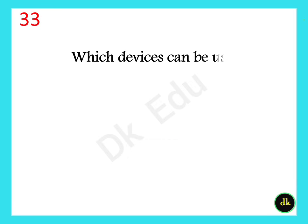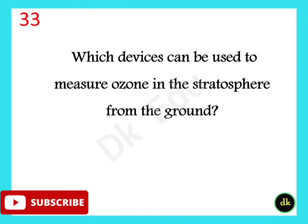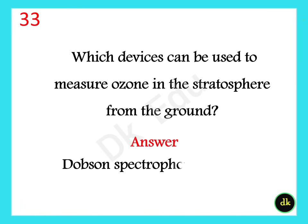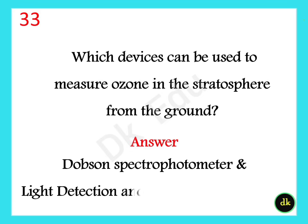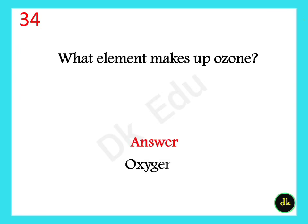Which devices can be used to measure ozone in the stratosphere from the ground? The Dobson Spectrophotometer and Light Detection and Ranging (LIDAR). What element makes up ozone? Oxygen.